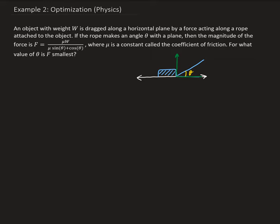then the magnitude of the force is given as mu, where mu is the coefficient of friction, multiplied by the weight of the object, all divided by mu times sine theta plus cosine theta.